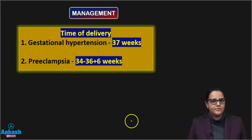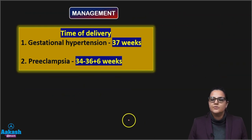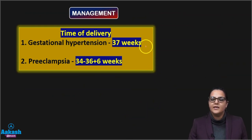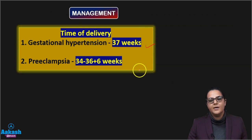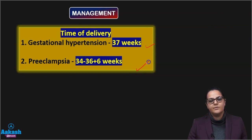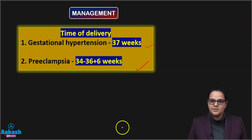When do we need to deliver this patient? If a patient has gestational hypertension, we deliver by 37 weeks. If she has preeclampsia, we deliver by 34 to 36+6 weeks.